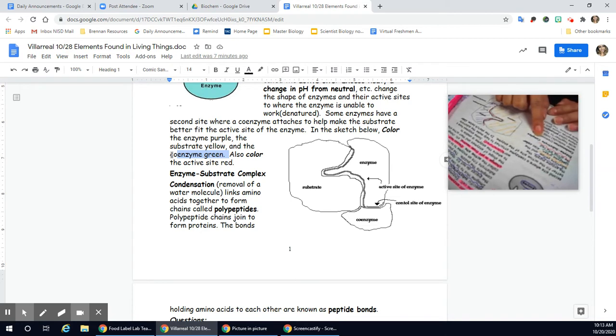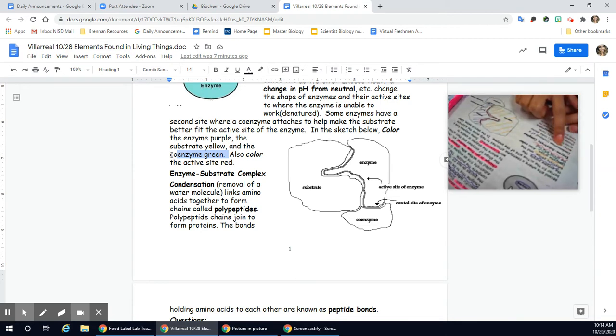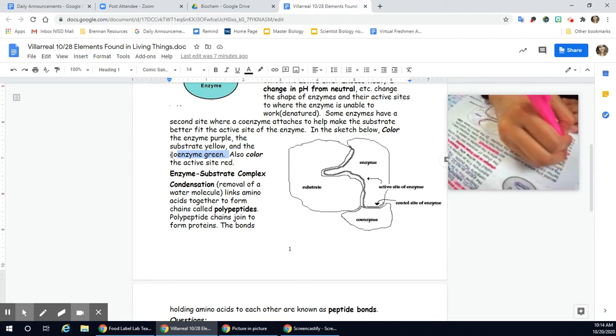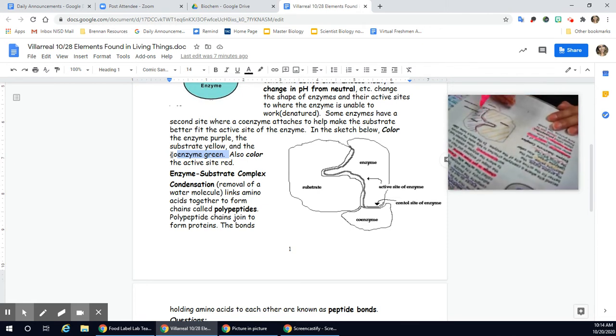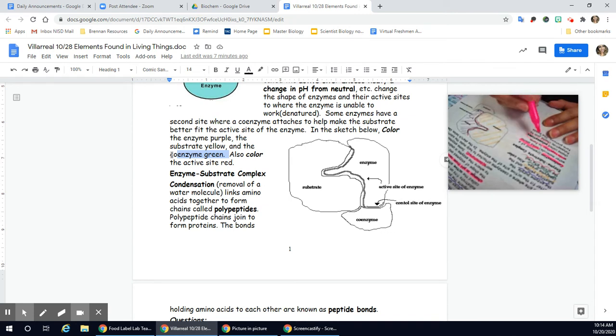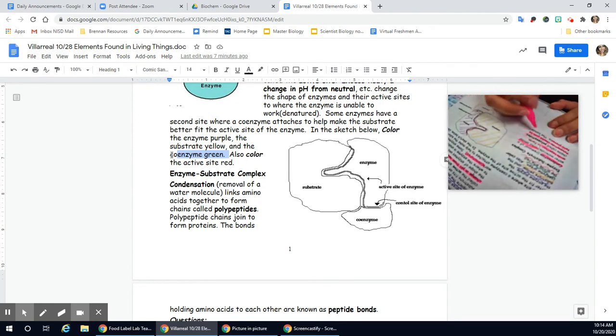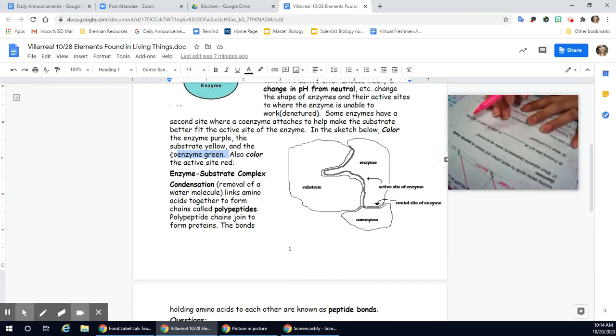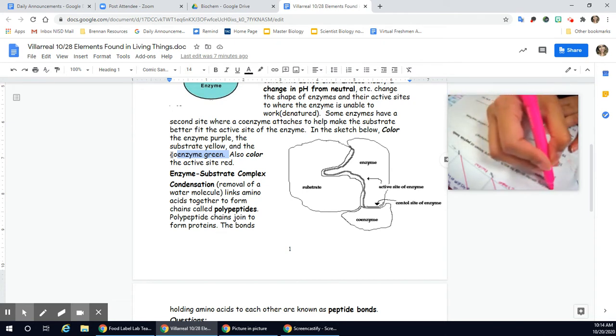Enzyme substrate complex. Condensation is the removal of water molecules. When I do condensation, the process of condensation, I am linking amino acids together to form chains. These chains are called polypeptides. So condensation, I'm linking amino acids together. So I'm building, right, that polymer. These are polypeptide chains. They join to form ultimately proteins. So polypeptides come together to make proteins. The bonds holding amino acids together, these are peptide bonds. So those that hold amino acids together, those are peptide bonds.